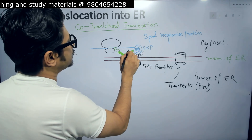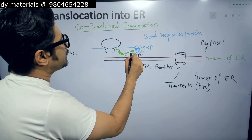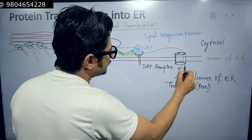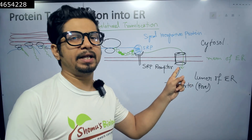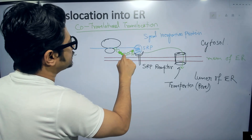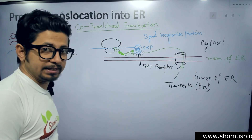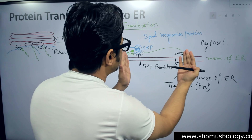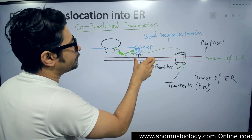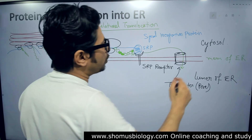The signal recognition protein binds to the signal of the polypeptide chain, attaches to it, and then starts to initiate a pulling mechanism of this polypeptide chain via the transporter in the ER membrane to bring the polypeptide inside the ER lumen. The moment SRP attaches to the signal sequence, they also increase the fluidity in the ER membrane so that the transporter comes very close to the SRP and SRP receptor — not distantly apart. Once they come very close, the polypeptide can be dragged and transported through this transporter.